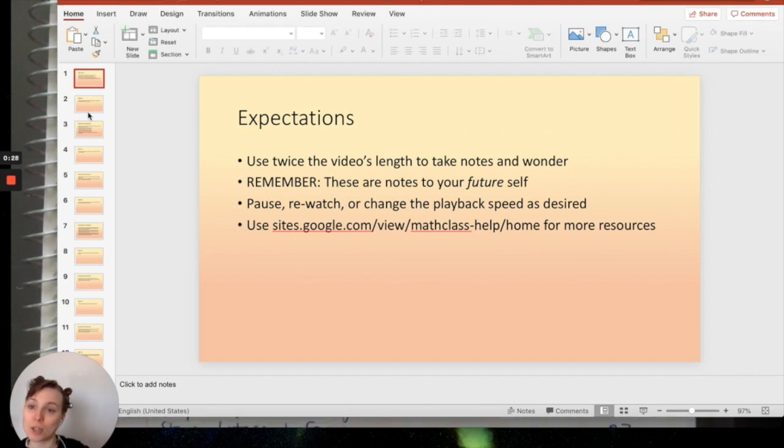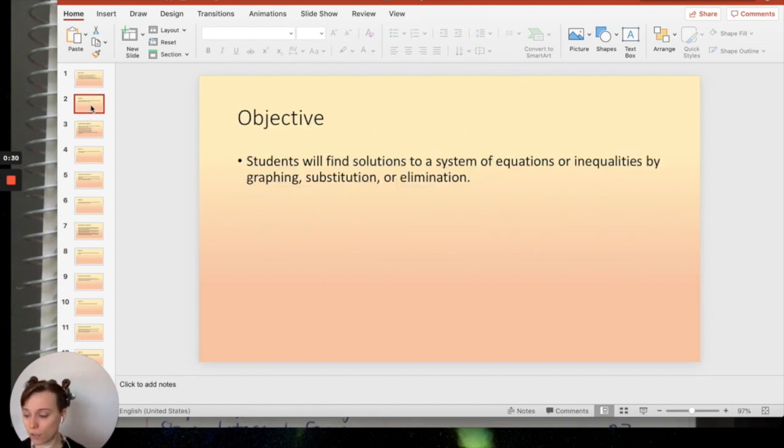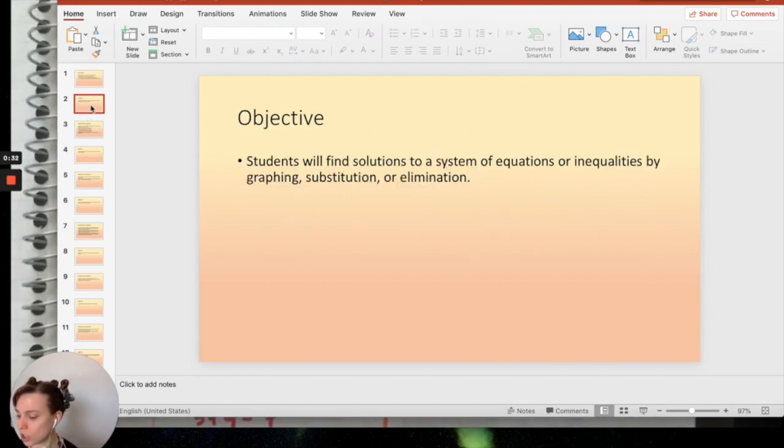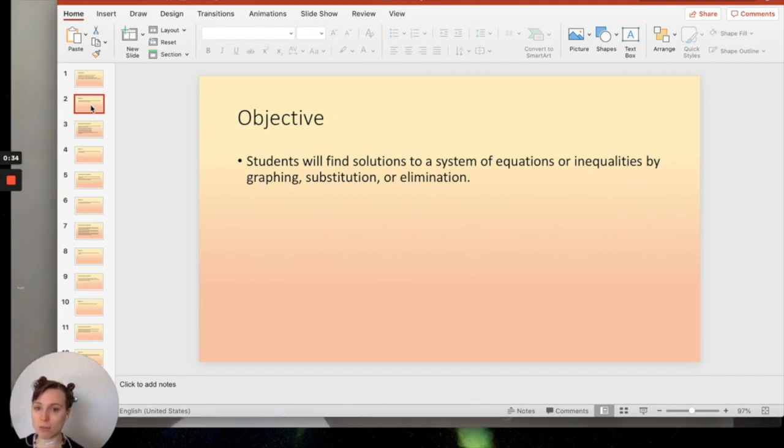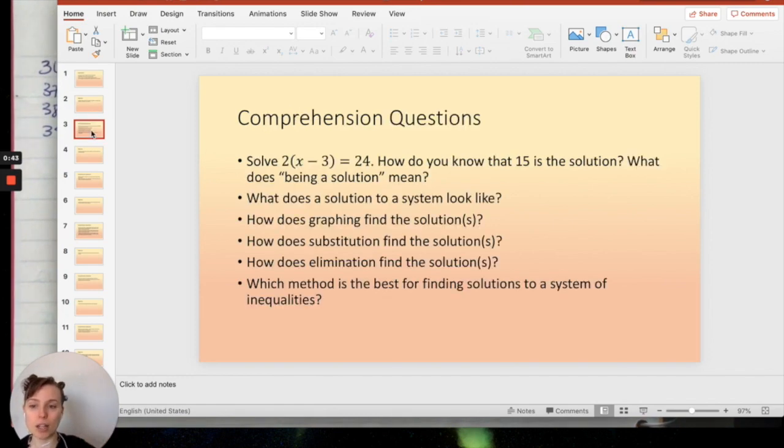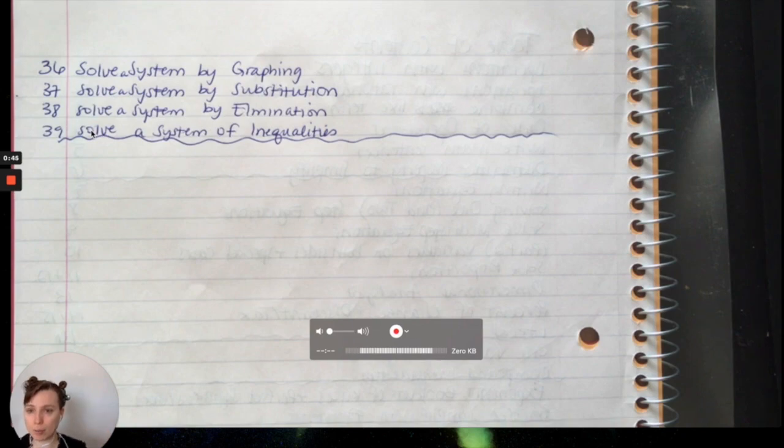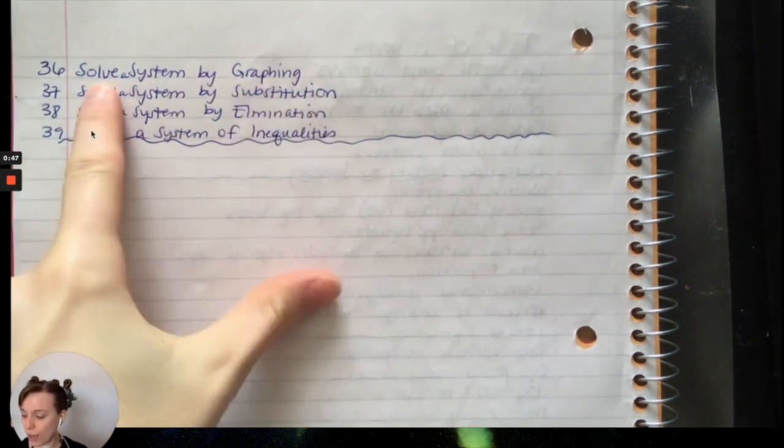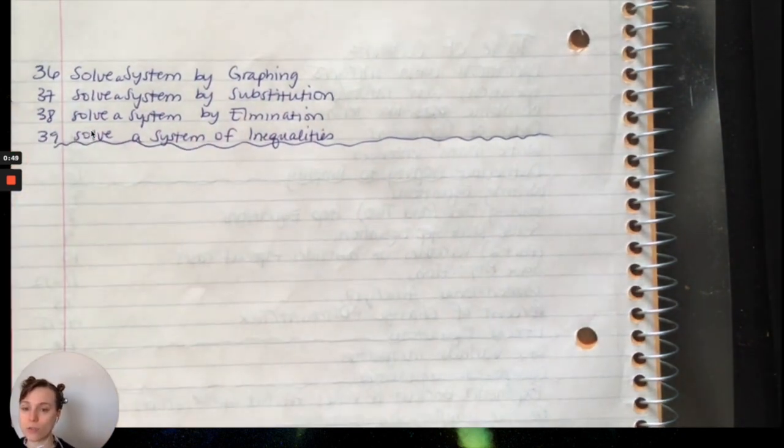Our objective is the same for the rest of our unit. We just finished graphing the system of equations to find its solution. We're now going to move on to substitution and we will then move on to elimination and then inequalities. Here's our comprehension questions, here's our table of contents. We're now on page 37 for substitution.